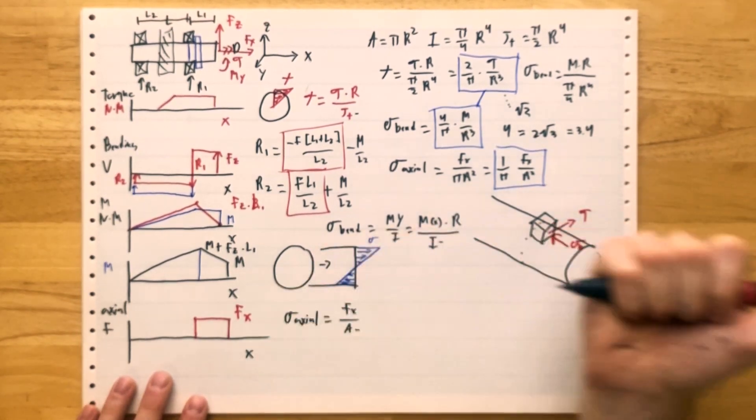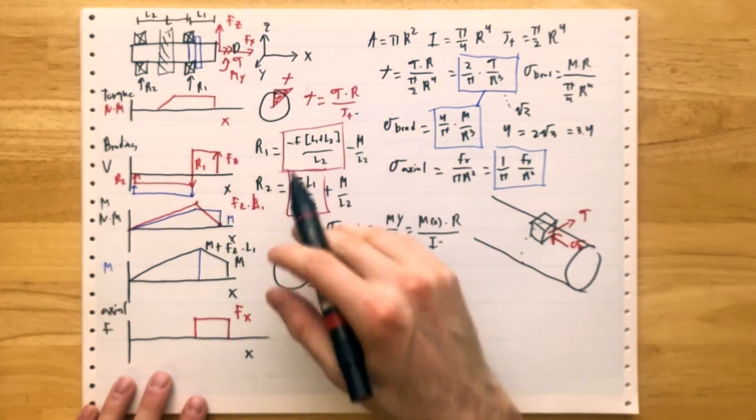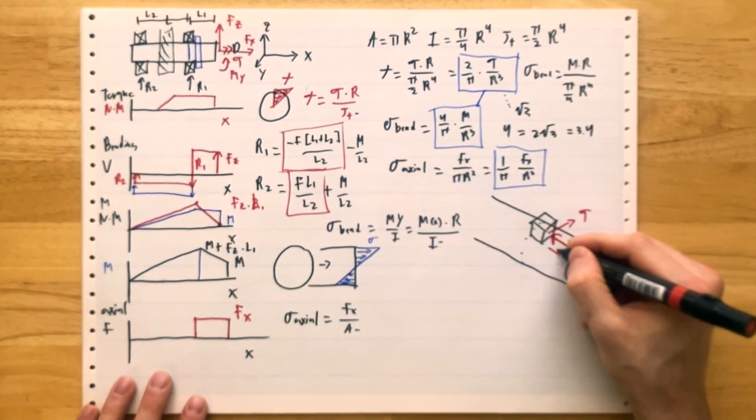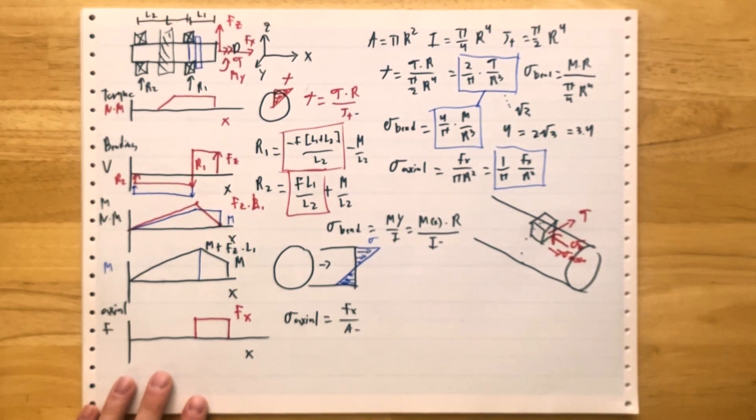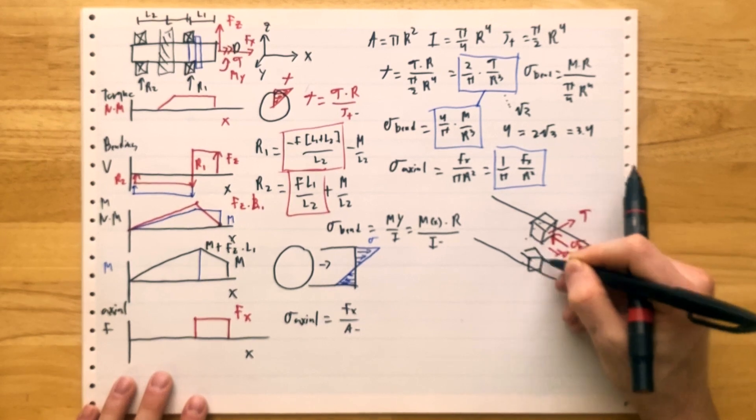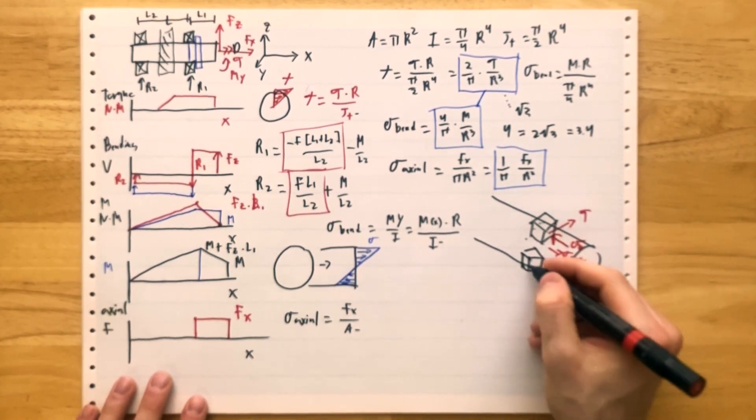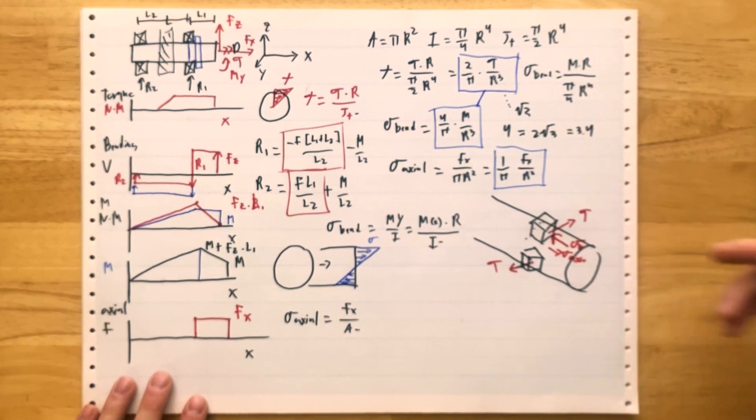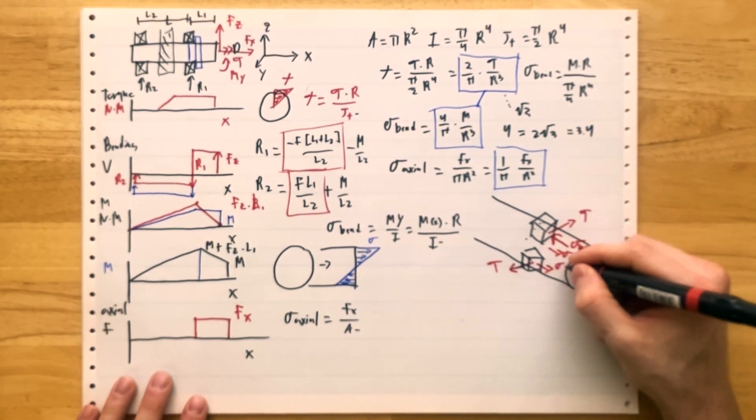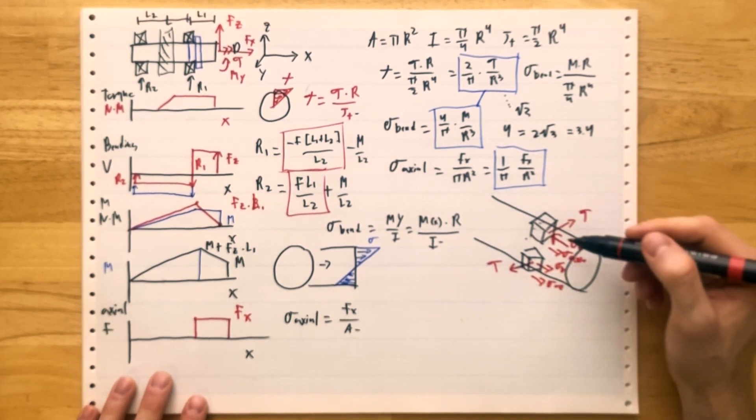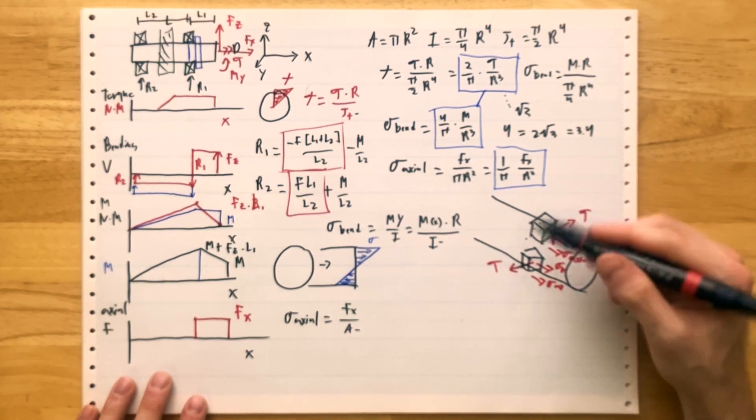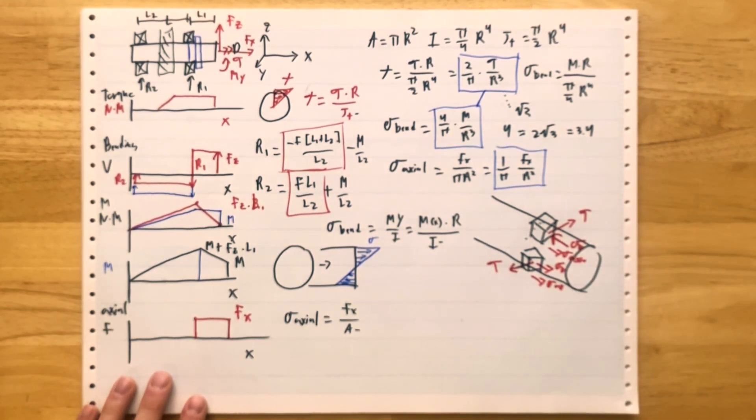However, I'm also pulling on that shaft axially. I could be pushing, but right now FX positive is pulling. So I have a sigma axial going the other direction. And if I looked at the bottom of the shaft, it's basically the same story. The shear is going the opposite direction, which doesn't really matter. But now the bending and the axial stresses are lining up in the same direction. So if you're using a ductile material like aluminum or steel, like a typical metal, you're going to want to use a von Mises stress criterion to predict failure.